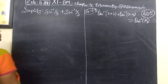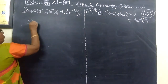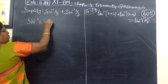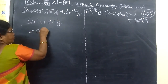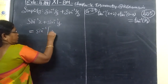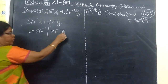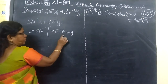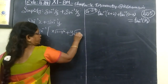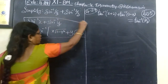Coming to the next question, we need to simplify sin inverse 1 by 3 plus sin inverse 2 by 3. This is the 11th business method. We are using the formula sin inverse x plus sin inverse y equals — this is the formula to be used in this problem.